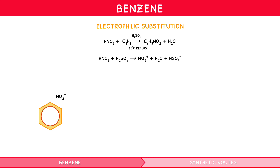The first stage of drawing an electrophilic substitution mechanism involves drawing the displayed formula for benzene, and to its side the nitronium ion with a positive charge. The nitronium is attracted to the region of high electron density within the delocalised ring of benzene, accepting its electrons to form a dative bond. We indicate this by drawing a double-headed curly arrow from the delocalised ring to the ion.